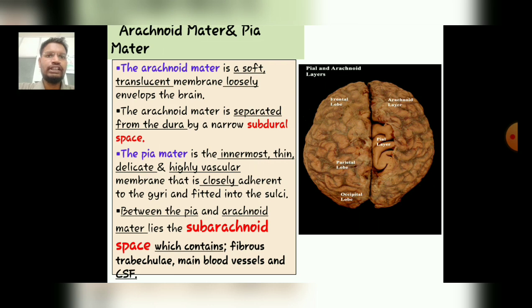Continuing our topic with the other layers, that is the Arachnoid Matter and the Pia Matter. The Arachnoid Matter is a soft translucent membrane which loosely envelopes the brain, and is separated from the dura by a narrow subdural space. The Pia Matter is the innermost thin, delicate, and highly vascular membrane, closely adherent to the gyrus and fitted into the sulcus. Between the Pia and Arachnoid Matter lies the subarachnoid space, which contains fibrous trabeculae, the main blood vessels, and the cerebrospinal fluid.